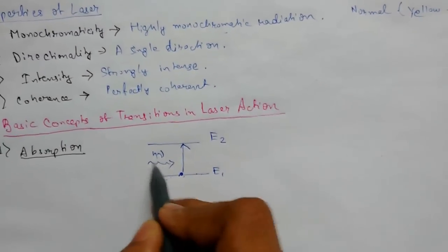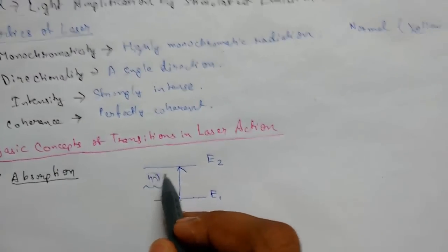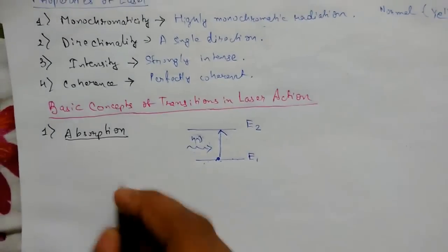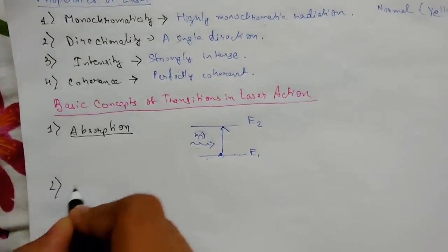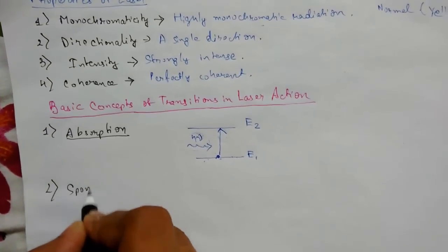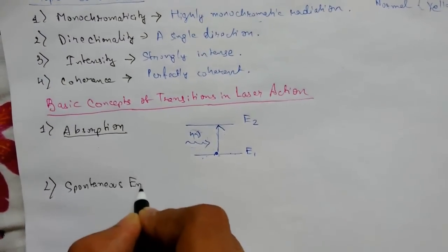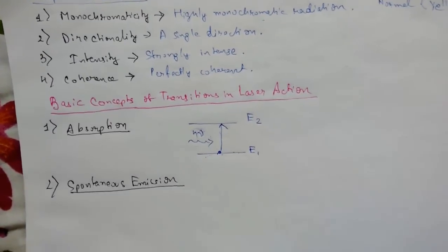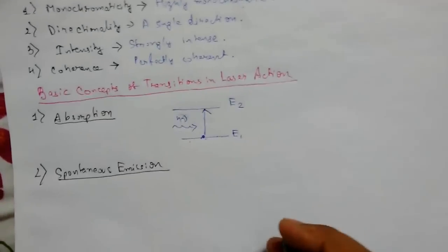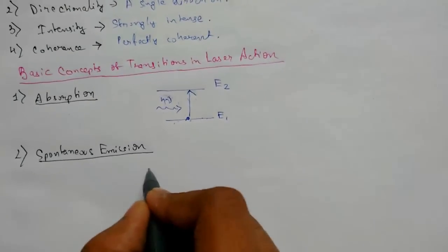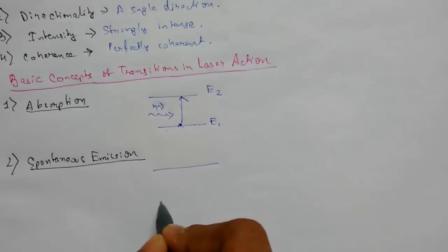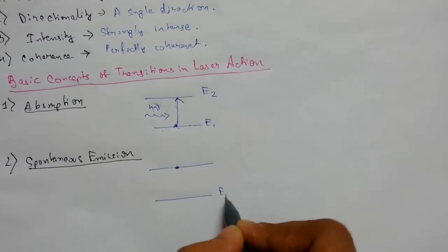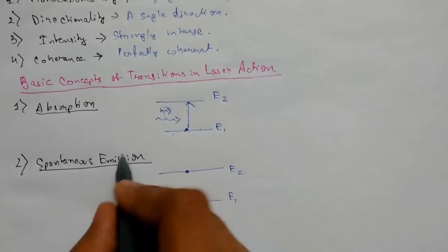At number two we have spontaneous emission. Again we have two energy levels E1 and E2. In emission, particles are emitted and photons also move out.